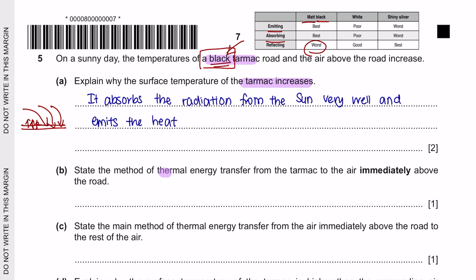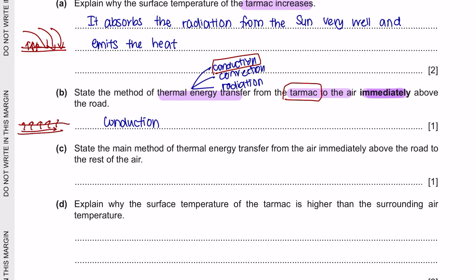Next question part 2: State the method of thermal energy transfer from the tarmac to the air immediately above the road. Now we have 3 types of thermal energy transfer: conduction, convection and radiation. Since the tarmac road is a solid, the heat that travels through the solid would be through conduction. Next question B: State the main method of thermal energy transfer from the air immediately above the road to the rest of the air. So as it travels through the air, that would be convection.